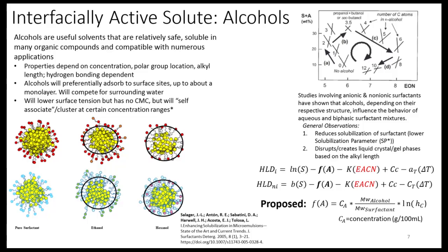Knowing this, we proposed a model using the F(A) term where the concentration of the alcohol is multiplied by a normalization of the size of the solute — in this case, crudely, the molecular weight of the alcohol divided by the molecular weight of the surfactant being used. This product is then multiplied by the natural log of what we call the colligative hydration number, HC, to return back to the original salt concentration without the use of alcohol. One caveat: we assume there are no changes to the EACN or the oil phase when adding the alcohol, assuming no changes to the excess oil phase.